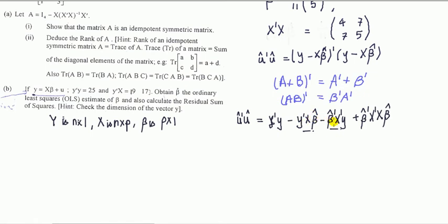We can combine them because one is the transpose of the other. What do we know about the transpose of a scalar? It's itself. So we may use this expression or that expression, but only one is more useful given the information in the question — specifically, we're given y-transpose-x.